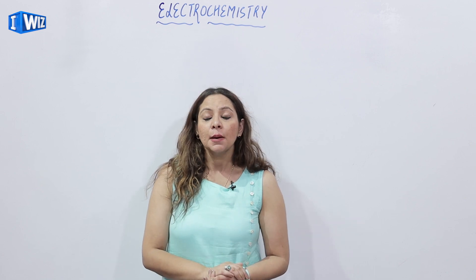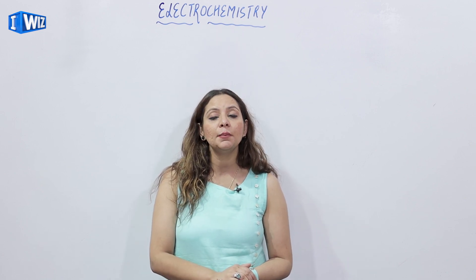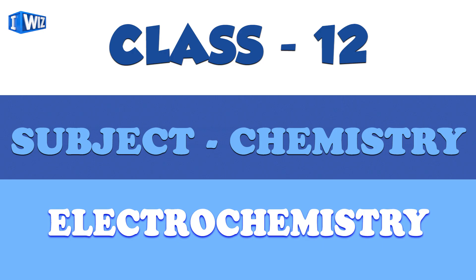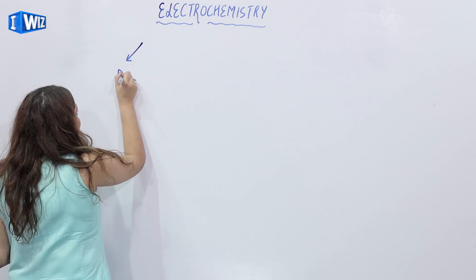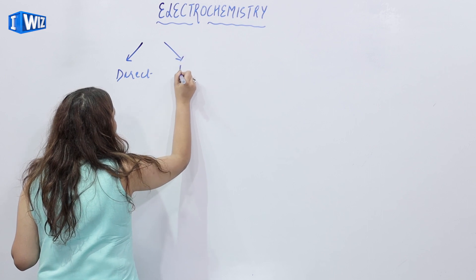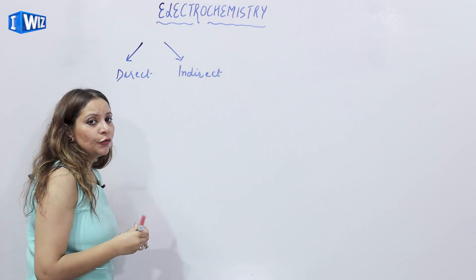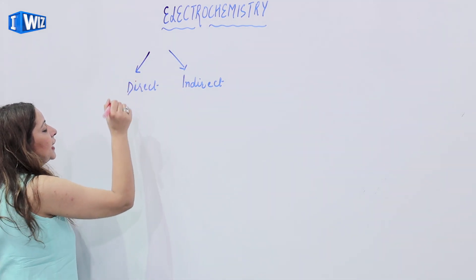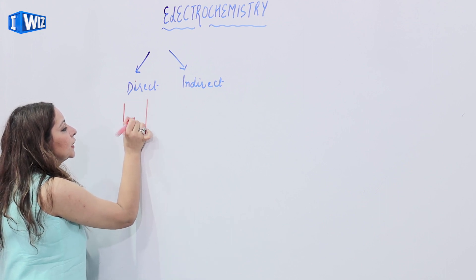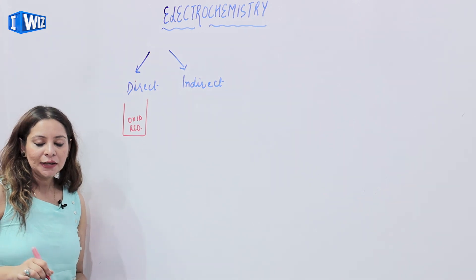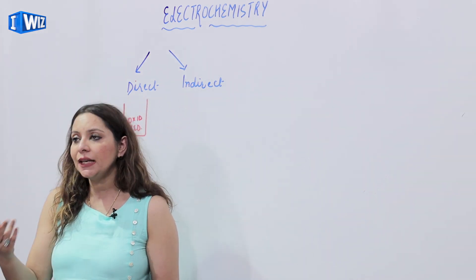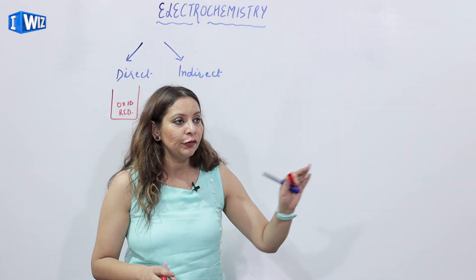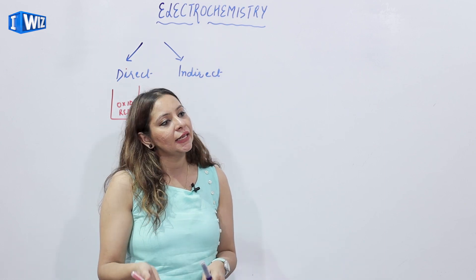What is an electrochemical cell? Before we start, I want to tell you that there are basically two types of redox reactions. One type is direct redox reaction and the other is indirect redox reaction. In a direct redox reaction, we have a single beaker in which oxidation and reduction take place. The substance getting oxidized and the substance getting reduced are placed close to each other, so electrons don't need to travel far — they are in the same beaker.